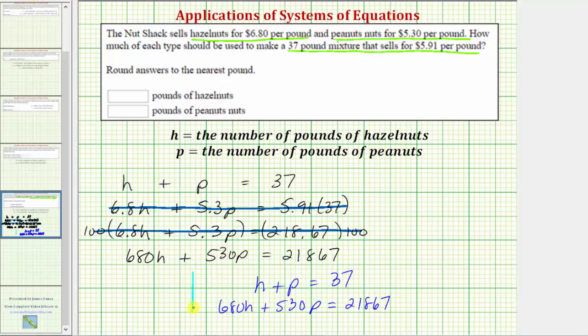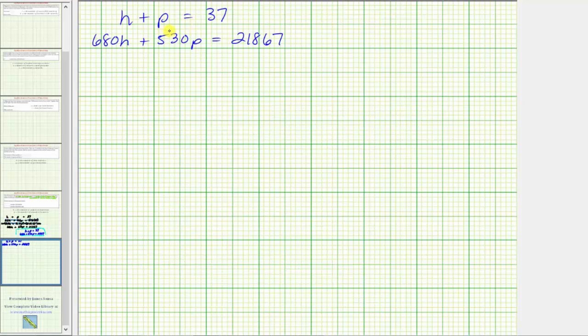Let's go ahead and solve this system of equations on the next slide. We decide whether we want to solve this system by using substitution or elimination. Because we can easily solve this first equation for h or p, let's use the method of substitution and solve this first equation for h by subtracting p on both sides. So if we subtract p on both sides, we have h equals 37 minus p.